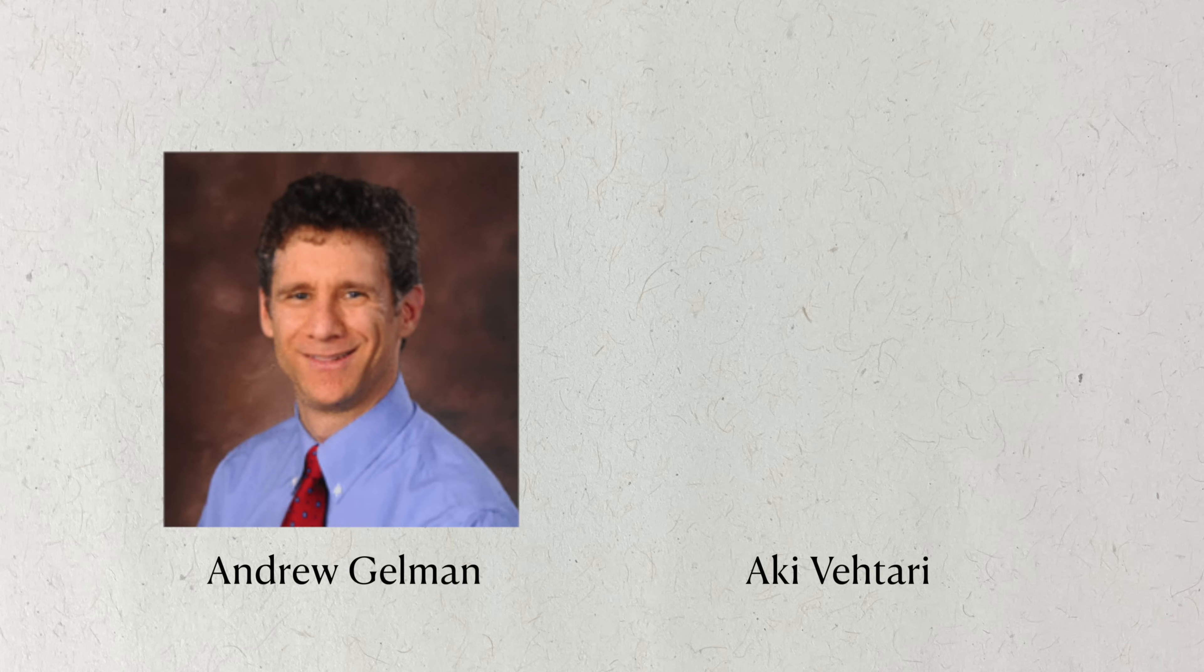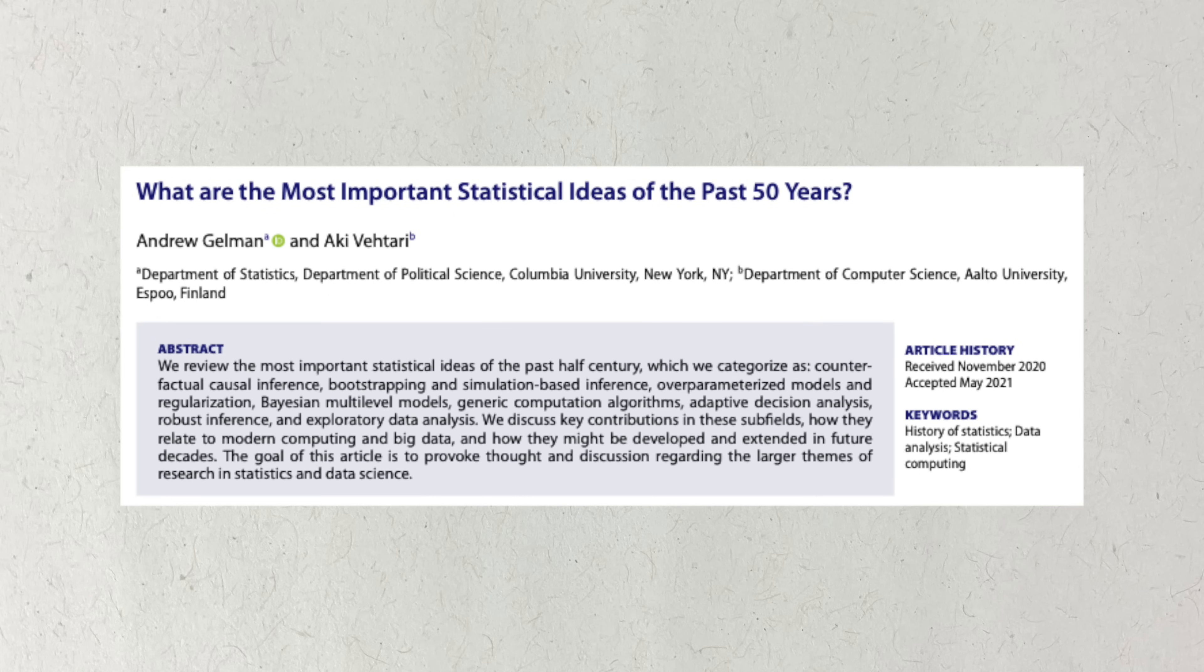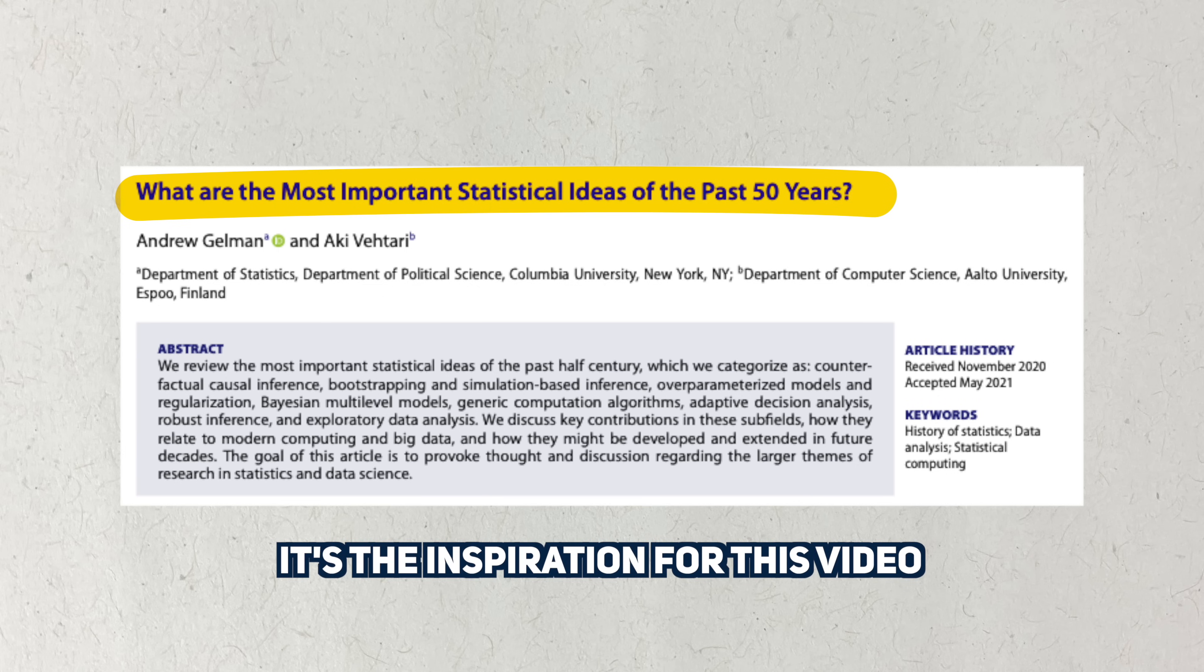In 2021, Andrew Gelman and Aki Vittari published an article in the Journal of the American Statistical Association, or JASA. JASA is one of the most prestigious journals in the field of statistics, so publishing here is a big deal. But instead of a research manuscript, Gelman and Vittari publish an essay. This essay is titled, What are the most important statistical ideas in the past 50 years? And this article is what motivates this video.